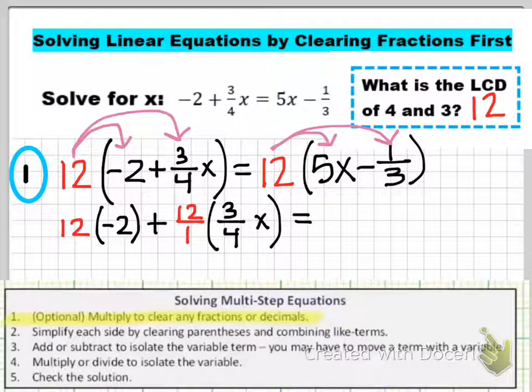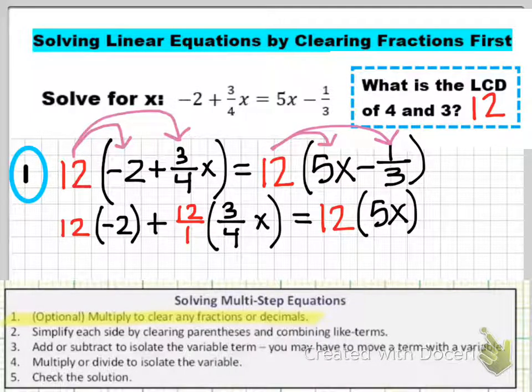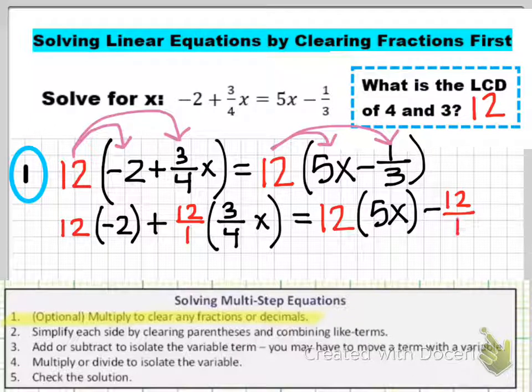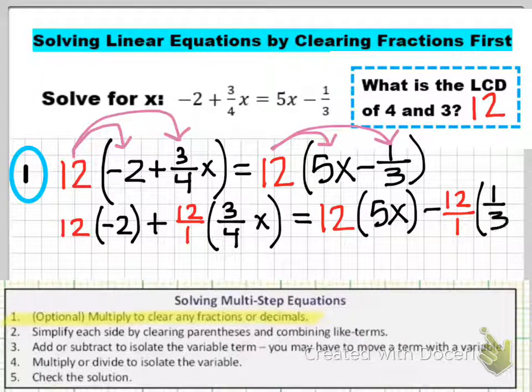On the right side, I have to distribute the 12 also. So 12 is going to get multiplied by 5x. Then I put the minus sign and then I'm going to make 12/1 again and multiply by 1/3.